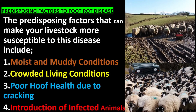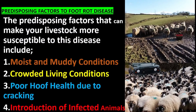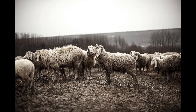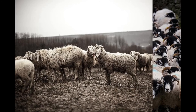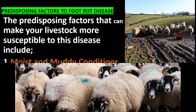The predisposing factors that can make your livestock more susceptible to this disease are: moist and muddy conditions, because foot rot disease thrives in wet, muddy environments with prolonged exposure — ensure that your animals have access to dry, well-drained areas. Crowded living conditions: overcrowding can facilitate the spread of foot rot disease. Ensure that your livestock have enough space to move around comfortably, minimizing hoof-to-hoof contact.